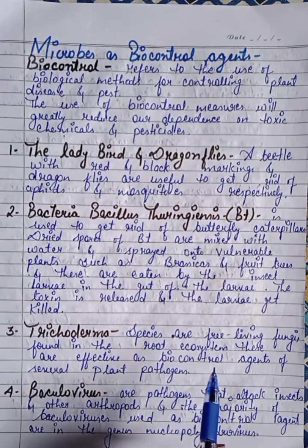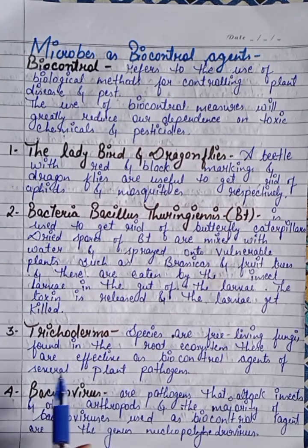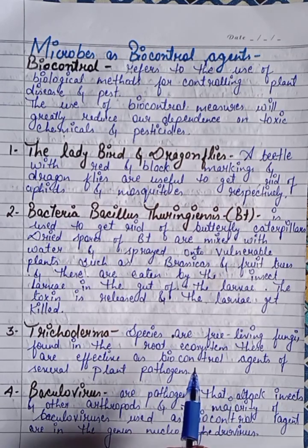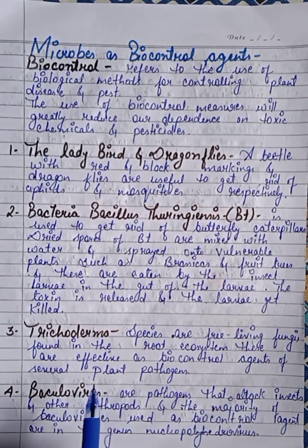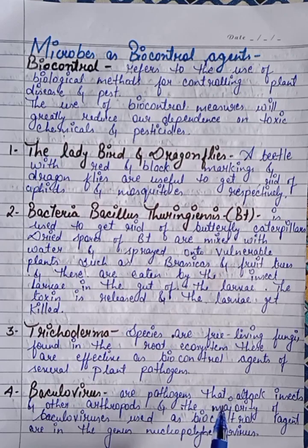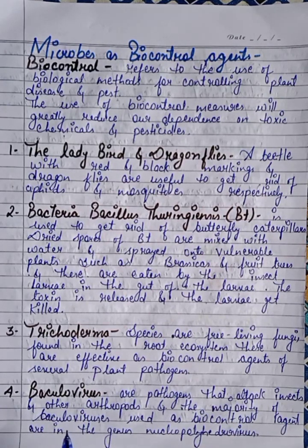Third is Trichoderma. Trichoderma species are free-living fungi found in the root ecosystem. These are effective as biocontrol agents against several plant pathogens.